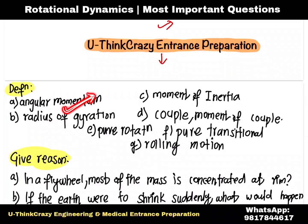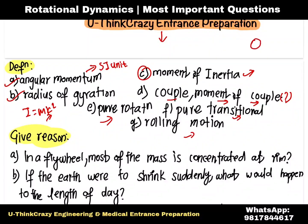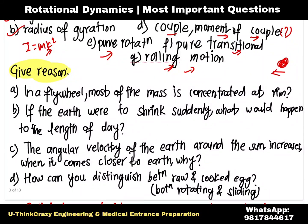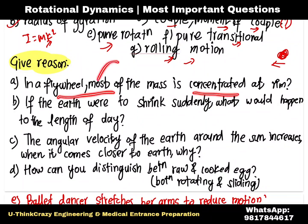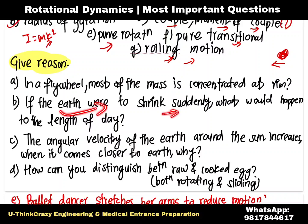We will find angular momentum and its SI unit. We will find the radius of gyration — I equal to mk squared — and the moment of inertia definition, the moment of couple, and the difference. We will also find pure rotation and rolling motion.